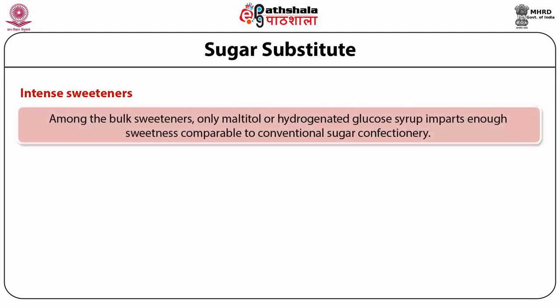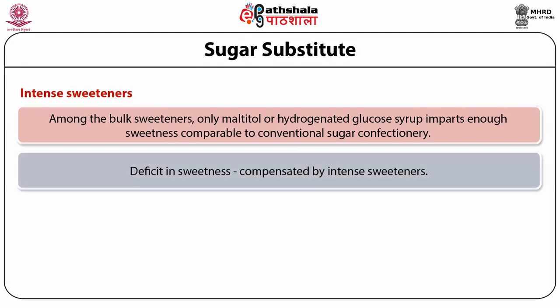Among the bulk sweeteners, only maltitol and hydrogenated glucose syrups impart enough sweetness comparable to conventional sugar confectionery. The deficit in sweetness has to be compensated by other approaches, such as using colored wrap for an uncolored product. The wrapper color can efficiently convey product characteristics to the consumer and also gives the benefit of product stability — for example, covering the product with a colored wrapper reduces light exposure.